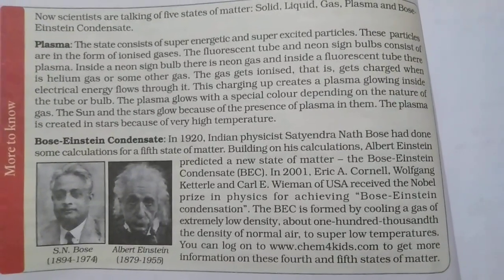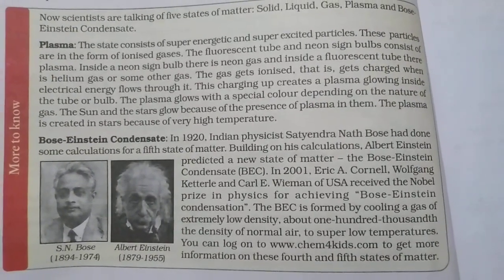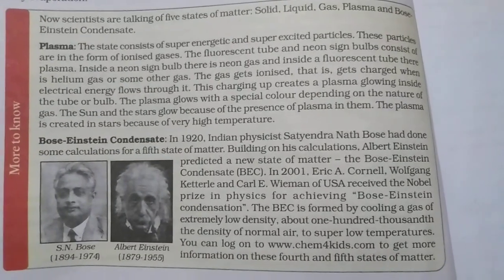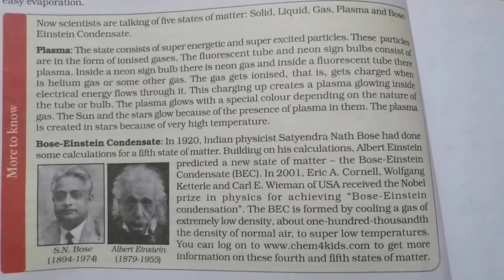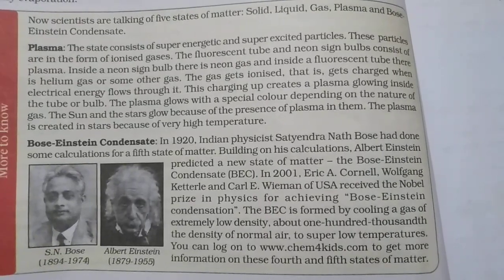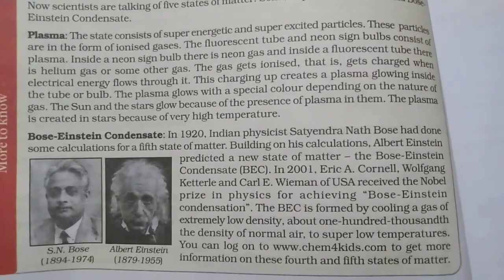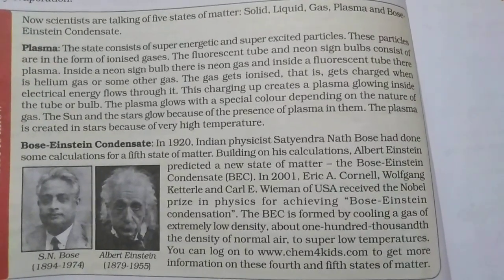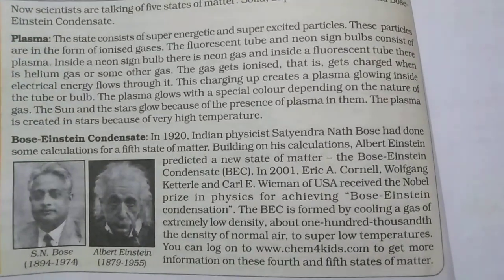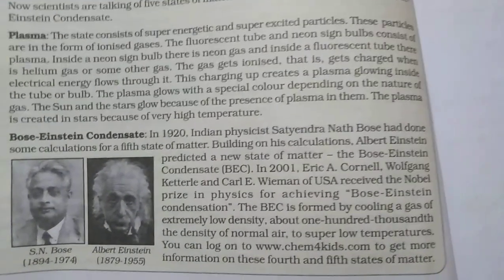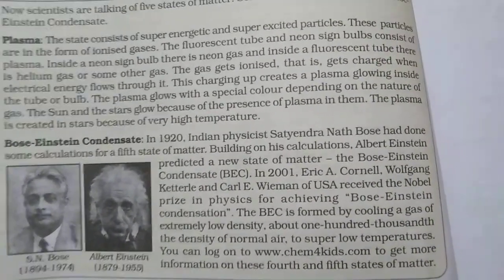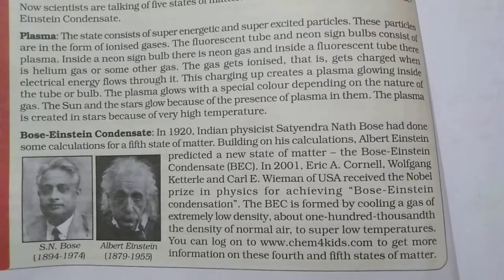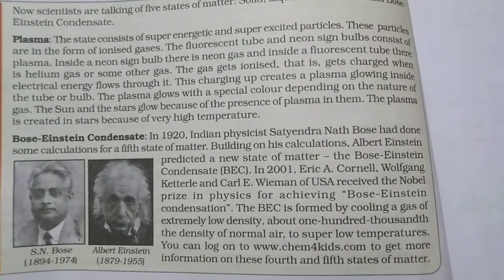But scientists say that there are actually five states of matter: solid, liquid, gas, plasma, and Bose-Einstein condensate. First, I am going to tell you what plasma is. Plasma is a mixture of free electrons and ions, and it is known as the fourth state of matter. Plasma occurs naturally in stars, including the Sun.